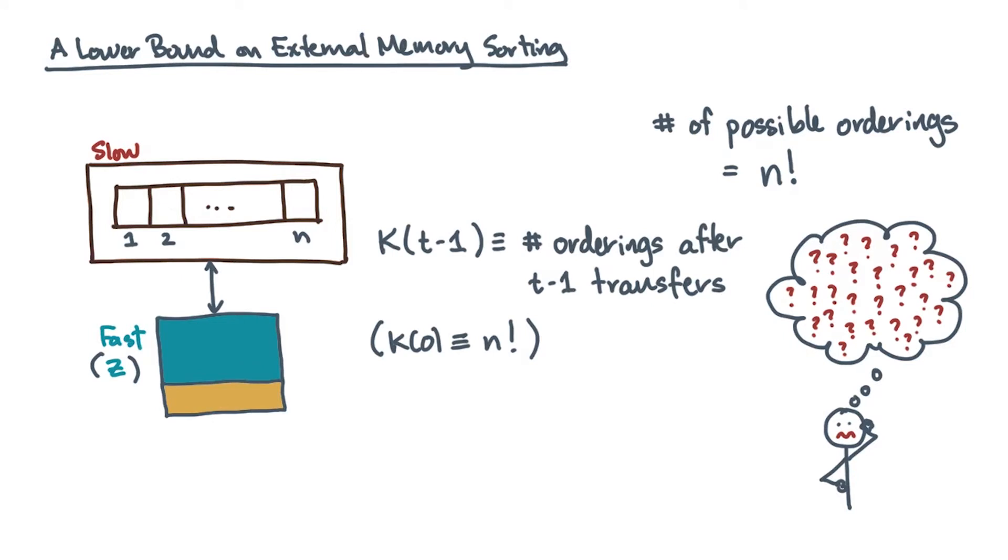Suppose there have been t minus 1 transfers. Let k of t minus 1 denote the number of possible orderings that remain. And remember, initially, there are n factorial such orderings.